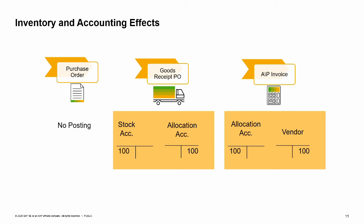The allocation cost account is a transfer account used to check if goods receipt POs and the AP invoices match. The allocation account's total balance represents the value of all open goods receipt POs that are not yet copied to an AP invoice.